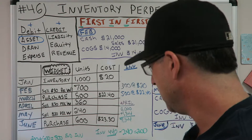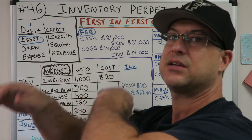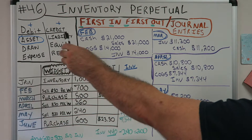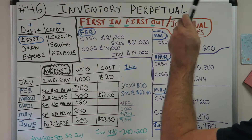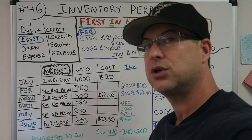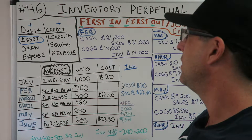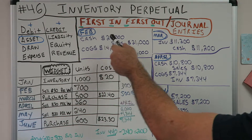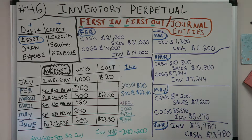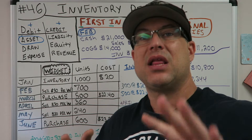This is Inventory Perpetual, number 46. We've done a lot of inventory — let's go. We're going to do first-in first-out journal entries — FIFO journal entries. We're going to buy and sell widgets, track their costs, and make journal entries in February, March, April, May, and June.